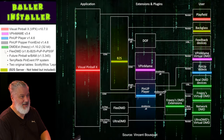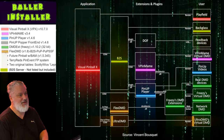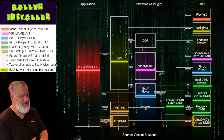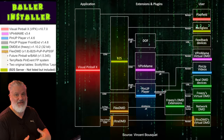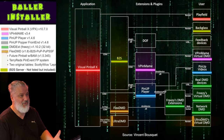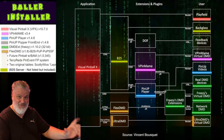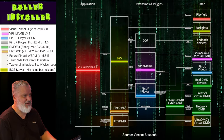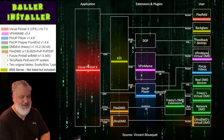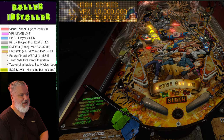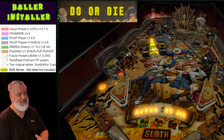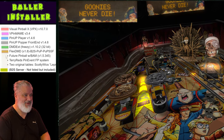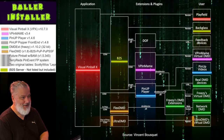FlexDMD is an interesting one. There used to be a program called UltraDMD - referenced further down in the document - which was basically for people who wanted to create a dot matrix display for original tables that didn't have a ROM. FlexDMD supersedes UltraDMD and does it better with much better performance. You need to have FlexDMD installed to run any table that says it requires FlexDMD.